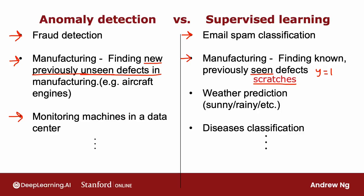Whereas returning to supervised learning, if you want to predict the weather, there are only a handful of types of weather you typically see — is it sunny, rainy, is it going to snow? Because you see the same output labels over and over, weather prediction tends to be a supervised learning task. Or if you want to use the symptoms of a patient to see if the patient has a specific disease that you've seen before, that would also tend to be a supervised learning application.